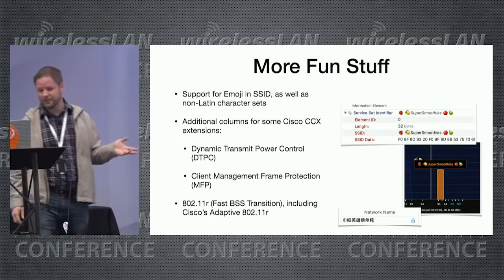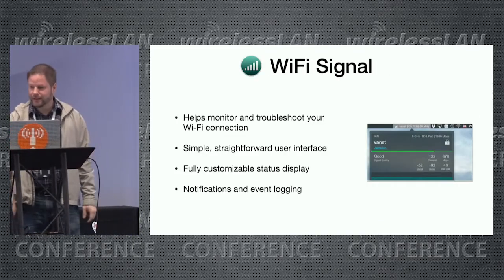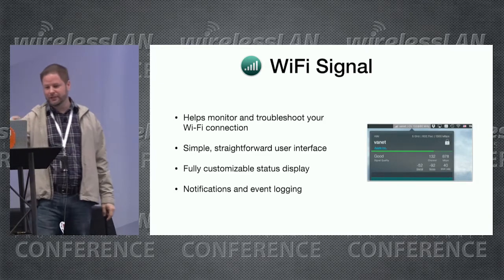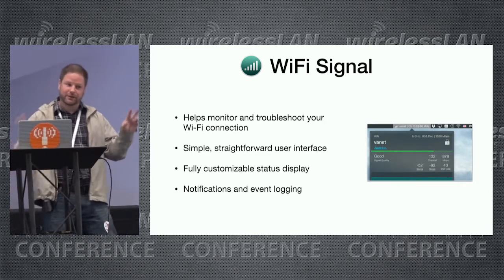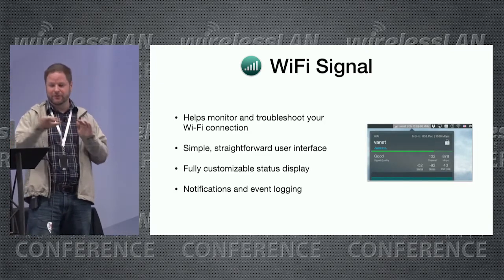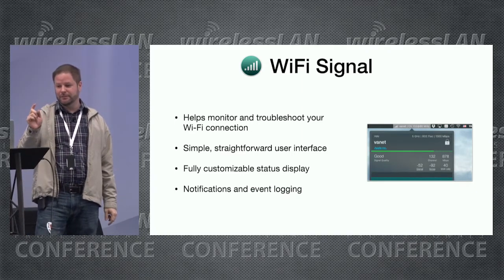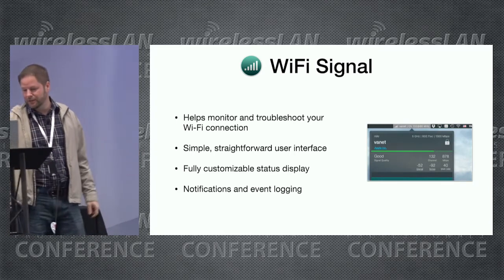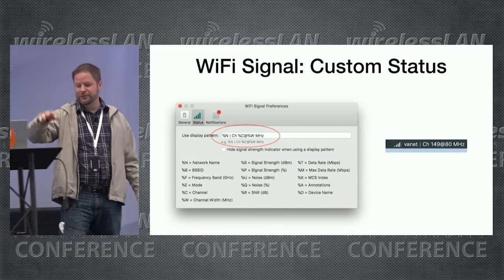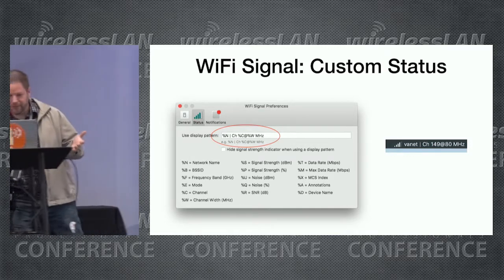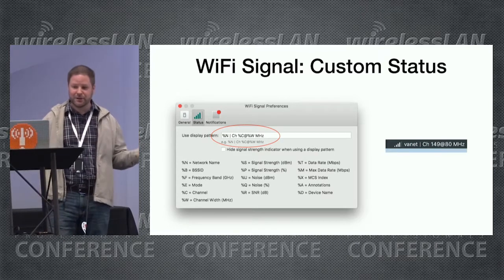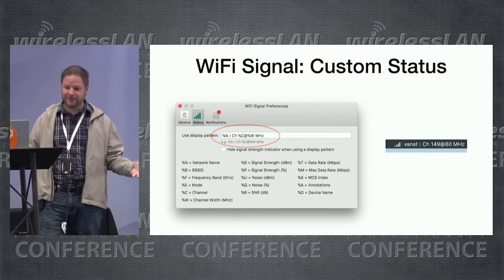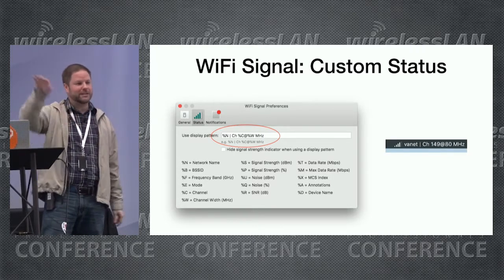Wi-Fi Signal is another tool — a menu bar tool you can use to monitor your connection and what you're connected to. It has a customizable status display and provides notifications and event logging. In the preferences you can configure what to show in the menu bar: network name, channel and channel width, MCS index, the mode the network is running — whatever you want to display.